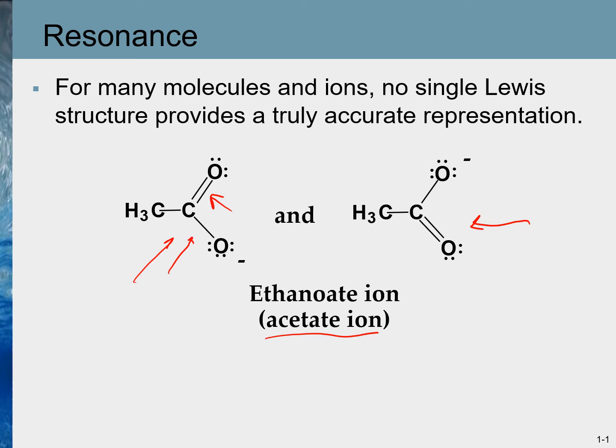Experimentally, we should observe that the double bond should be smaller than the single bond. However, when experimental studies were done — surprise surprise — it was found that both carbon–oxygen bonds were equal in size. That was really surprising, and there were many other evidences which pointed out that Lewis structures in many cases are not correct.